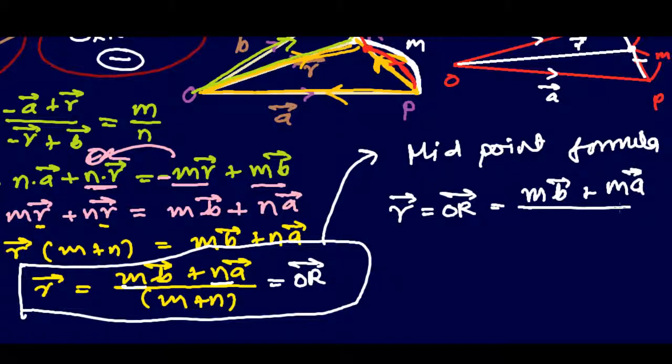because M and N both are equal, so it will now be M and in place of N, I'm writing M. So it's going to be MB plus MA divided by 2M.